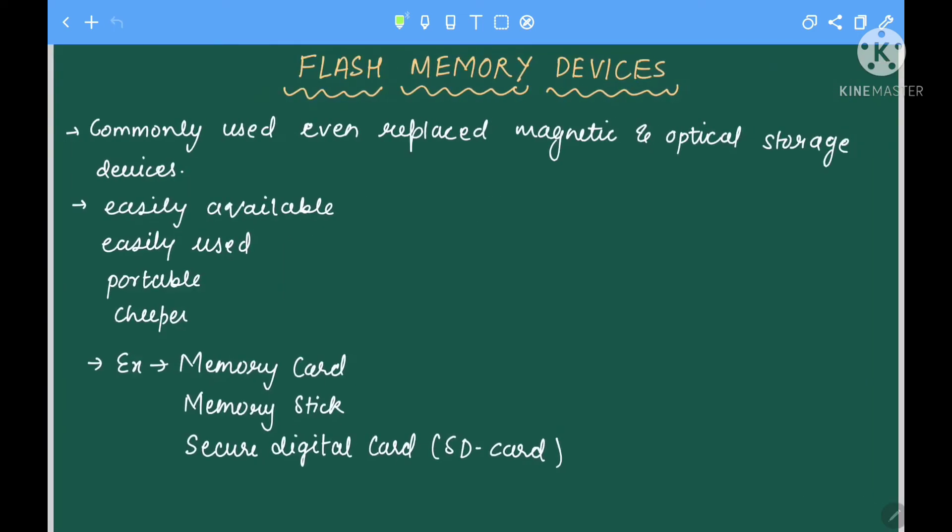Next, let's see the third type, which are flash memory devices. These are commonly used and have even replaced magnetic and optical storage devices. They are easily available, easy to use, portable, and cheaper. They have become so popular that they have replaced magnetic and optical storage devices. Examples include memory card, memory stick, and SD card.